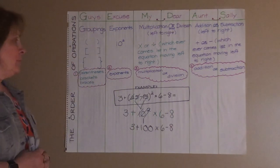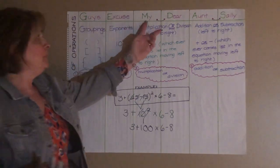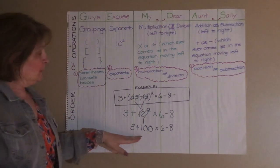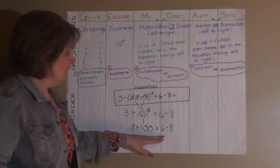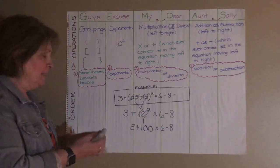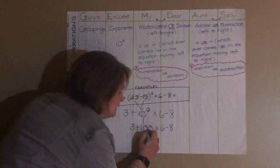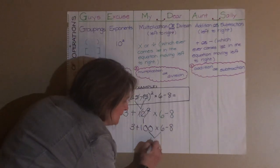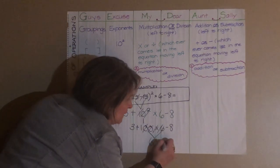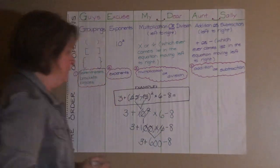Now we say to ourselves, what comes next? And it's multiplication or division. We don't have any division, but we do have multiplication. So we can't add the 3 yet, because we haven't done the multiplication yet. And 100 times 6 equals 600. So we can cross that part out and write the rest of the equation exactly how it's written.